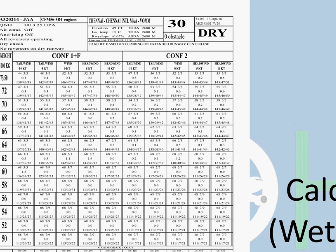Before we begin, know that this chart is made for QFE, air conditioning off, anti-icing off, all reverses operating, dry check — no reverses on dry runway, so that's not applicable. Now, all reverses operating is mentioned on this chart, but just for practice purposes I want you to consider it as all reverses inoperative, so I can show you a different method.